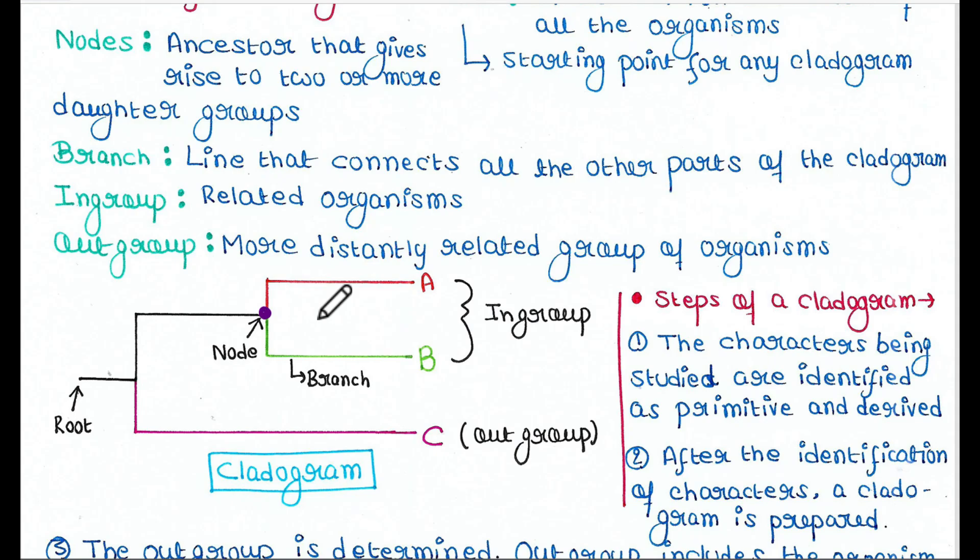Suppose it is D, which is a common ancestor of A and B. A and B are daughter groups of D since both of them arise from D. So this is all about node, branch, in-group, and out-group.